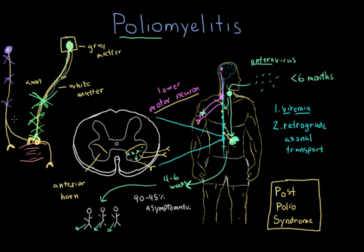Neurons throughout the body are dying naturally. But it's these neurons making the extra effort to support the muscles that, when they go, the patient really starts to notice that weakness. Post-polio syndrome can occur years after the original infection of polio.